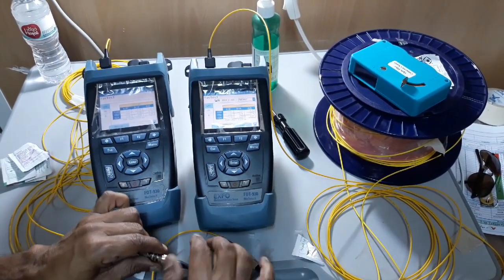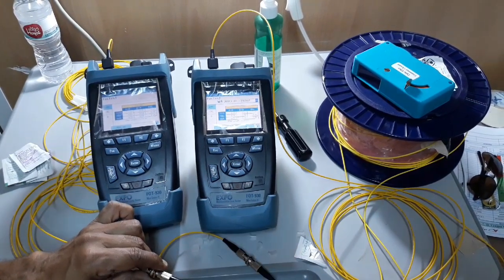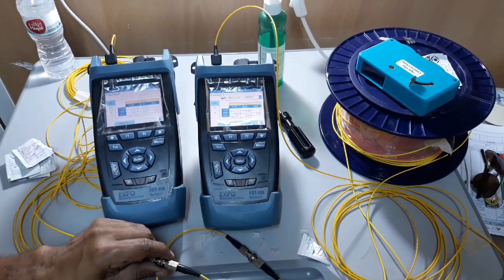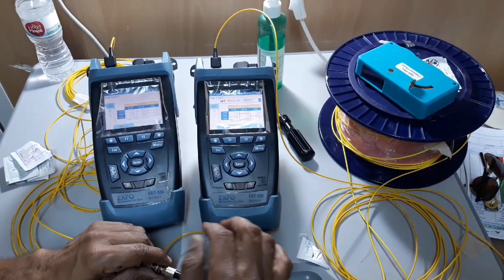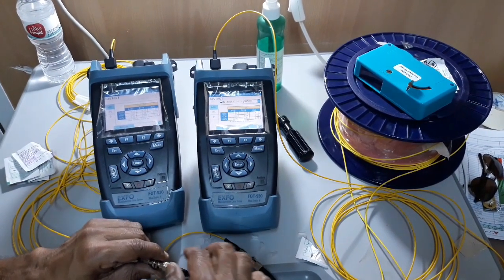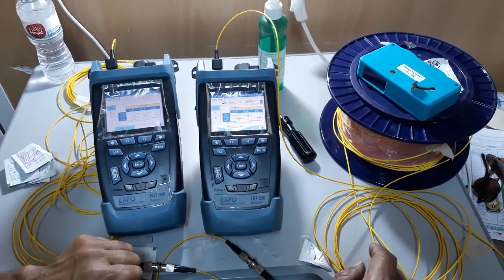So this fiber is okay and this link is okay and we can accept this link because the loss is within the budget.